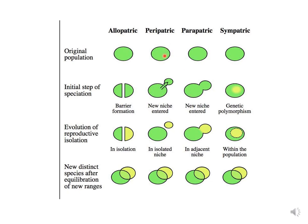Peripatric speciation is at a smaller level compared to parapatric. A new niche is formed but at a smaller level, and these two separate populations are unable to interbreed with each other and two new species are formed.